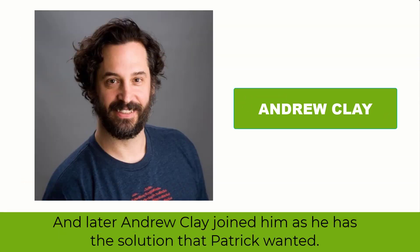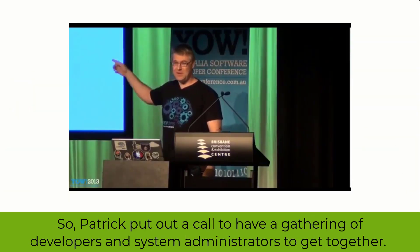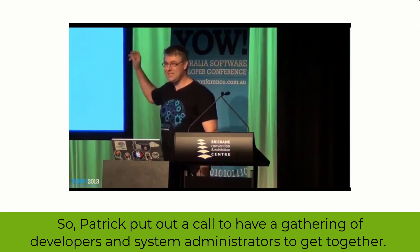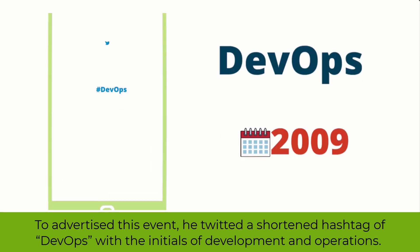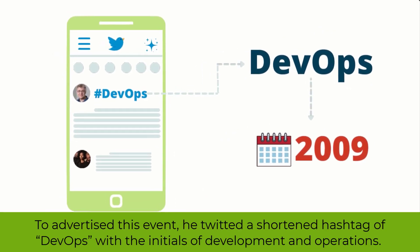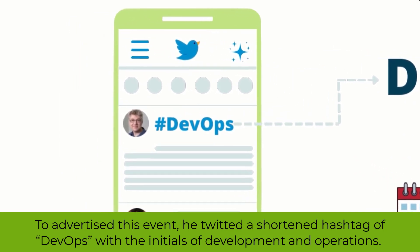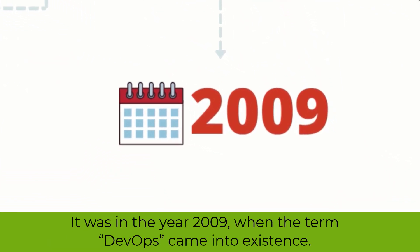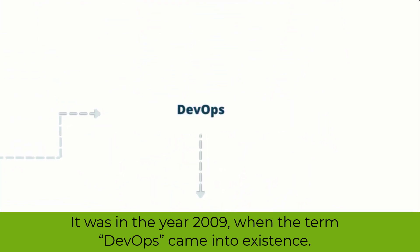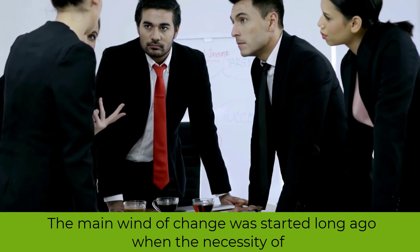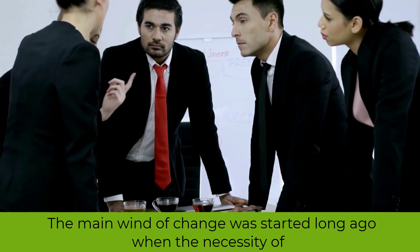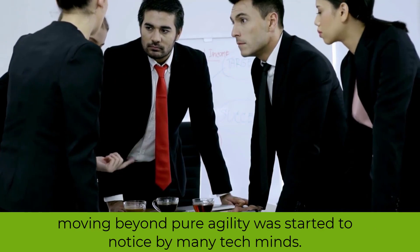Later, Andrew Clay joined him as he had the solution that Patrick wanted. So Patrick put out a call to have a gathering of developers and system administrators to get together. The main agenda was discussing the best ways to start bridging the gap between the two disparate fields. To advertise this event, he tweeted a shortened hashtag of DevOps with the initials of development and operations. It was in the year 2009 when the term DevOps came into existence. But it was not the exact beginning. The main wind of change had started long ago when the necessity of moving beyond pure agility was noticed by many tech minds.